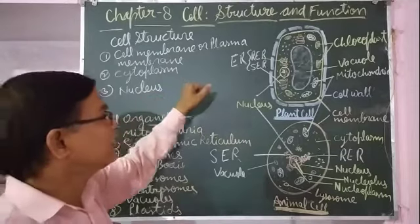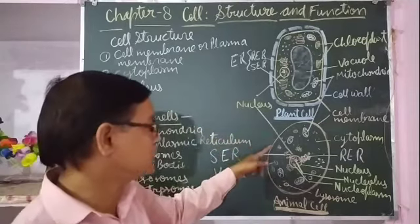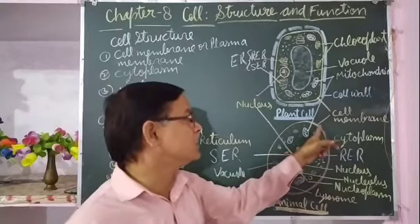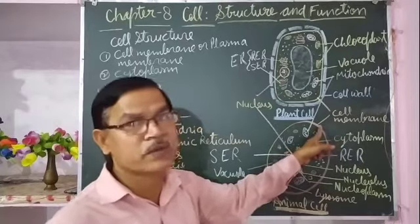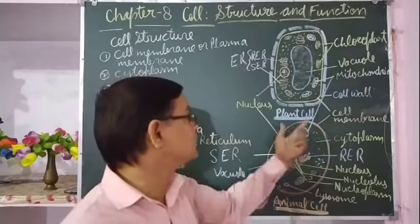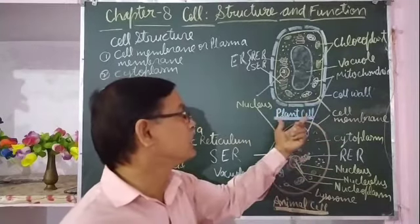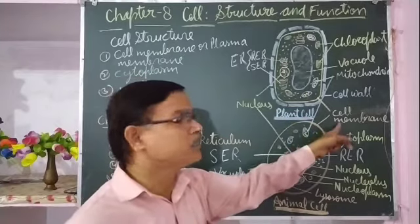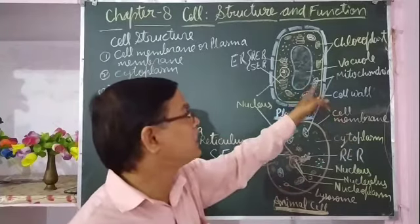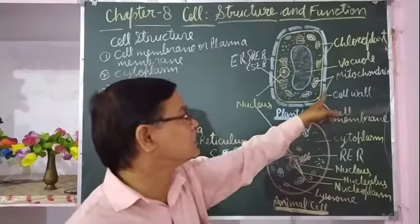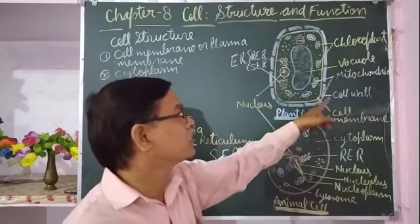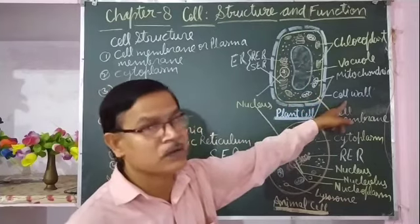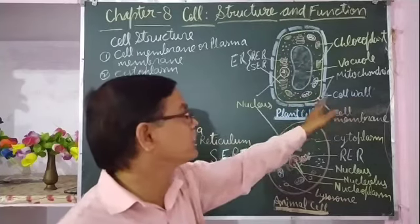Cell membrane is the outermost covering in the animal cell, as you can see here. This is the animal cell and this is the plant cell. In the animal cell, cell membrane is the outermost covering. In plant cell, it is found just below the cell wall. In plant cells, the cell wall is the outermost covering.